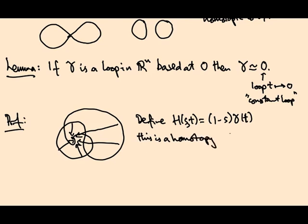At time s=0, the loop I get at gamma_0 is (1-0)×gamma(t), so that's gamma. At s=1 I get (1-1)×gamma, so I get the constant loop at zero. So it does give me a homotopy like this and all I need to check is that it's a based homotopy.